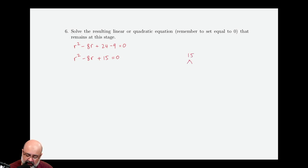1, 15, negative 1, negative 15, 2 doesn't work, 3 and 5, negative 3, negative 5. And we need factors that potentially add up to negative eight. Those are r minus three and r minus five.